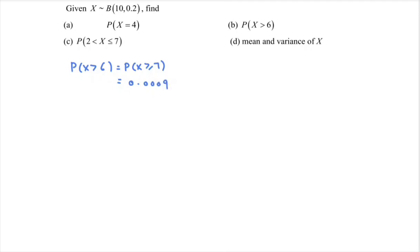Next, we are interested in part c: the probability that X is greater than 2 and less than or equal to 7. Do remember, we have to modify the situation so that we have the equal sign on both sides. For 7, it remains the same. But for 2, we have to modify it — it becomes 3.